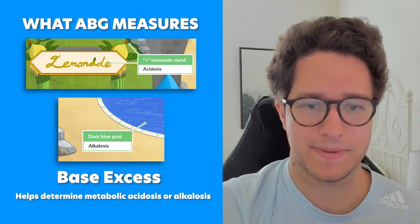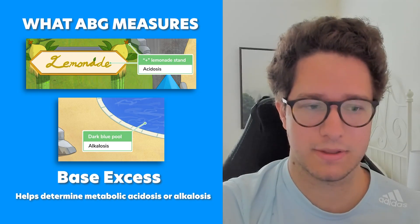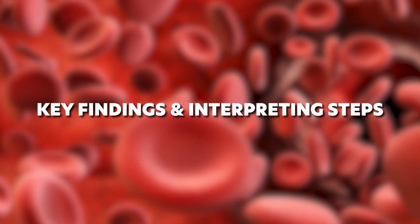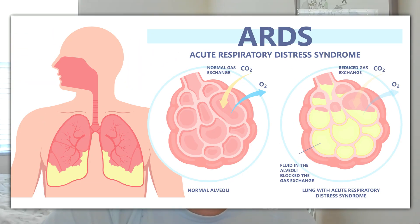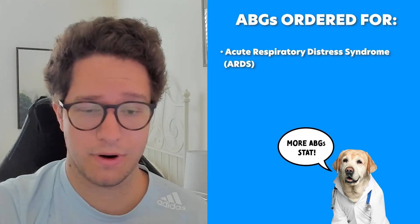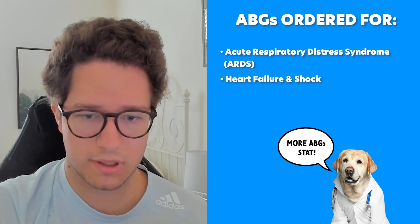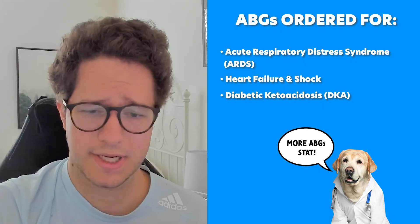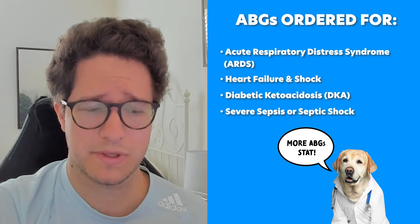Base excess helps us determine metabolic acidosis or alkalosis. ABGs are critical in the intensive care unit and any critical situation, in assessing patients with acute respiratory distress or metabolic disturbances. You're going to see them ordered for things like acute respiratory distress syndrome or ARDS, heart failure and shock, diabetic ketoacidosis or DKA, and severe sepsis or septic shock.